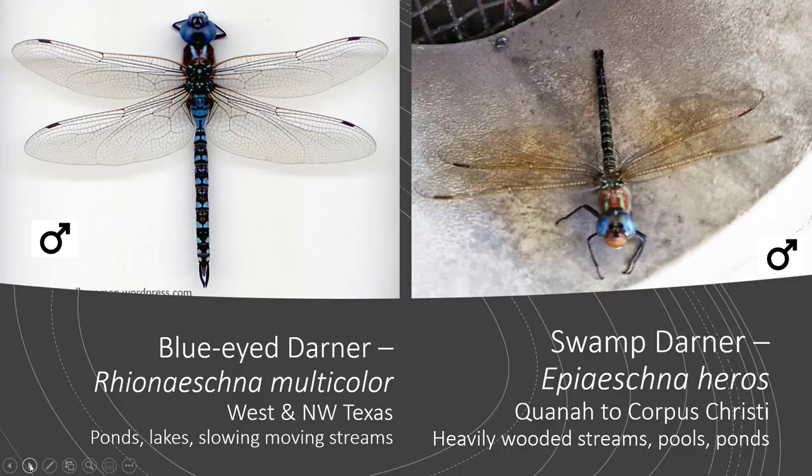Another really pretty one is called a Blue-Eyed Darner, found in West Texas and Northwest Texas. The Blue-Eyed Darner has blue eyes and the whole body is pretty much blue — the female is not quite as blue and striking but still has that color pattern. There's also a Swamp Darner found from Quanah to Corpus Christi, not found throughout the state. The Swamp Darner likes heavily wooded streams, pools, and ponds, while the Blue-Eyed Darner can be found around ponds, lakes, and slow moving streams in the west or northwest part of Texas.